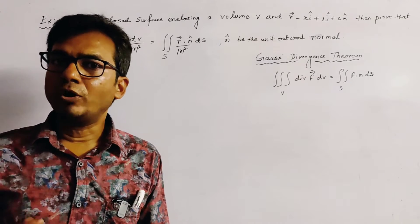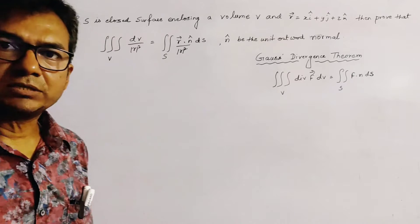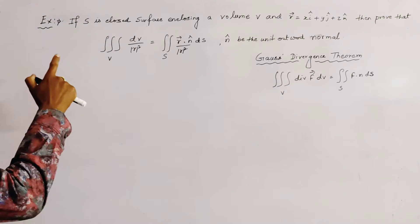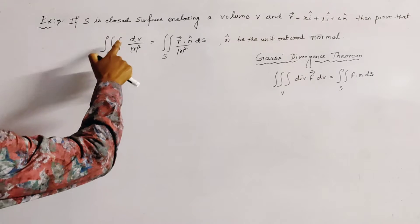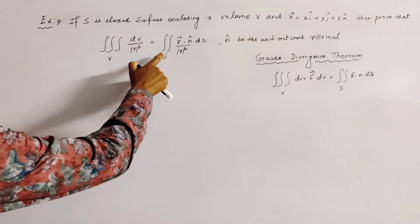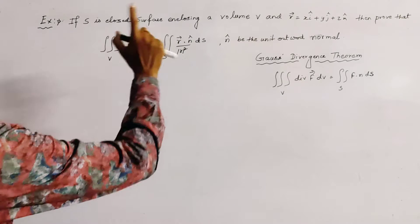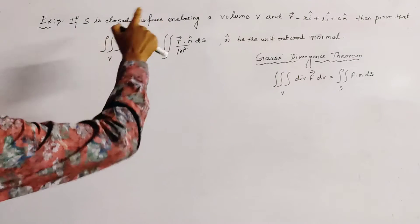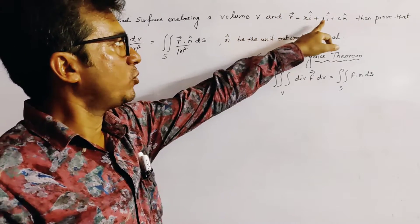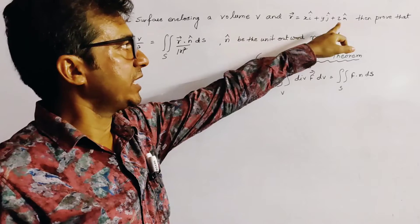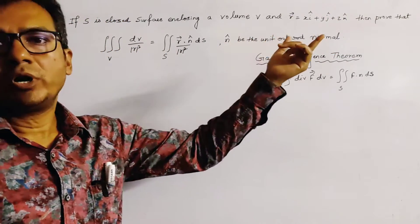This class is on integral transforms of vector calculus. In this class we prove the transformation: triple integration over V of dv/|r|² equals double integration over S of (r·n̂)/|r|² dS, where S is the closed surface enclosing the volume V, r is the position vector xi + yj + zk, and n̂ is the unit outward drawn normal.